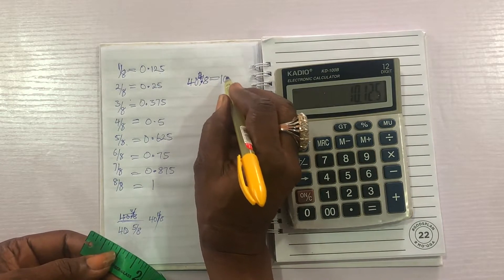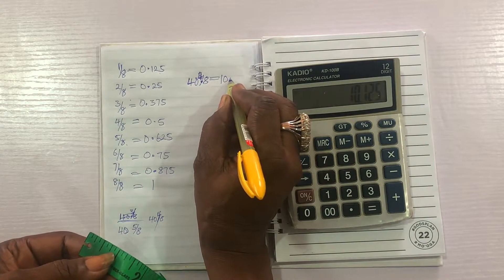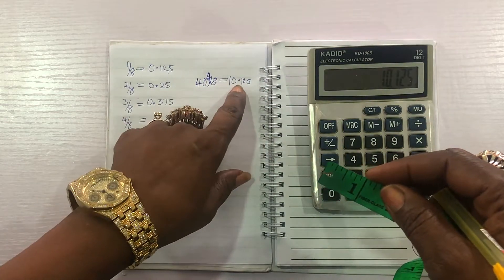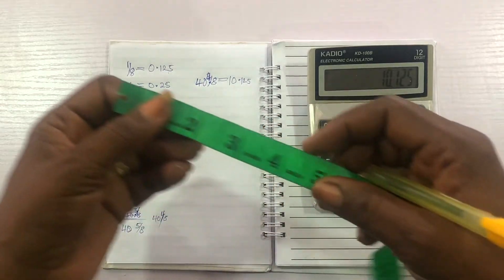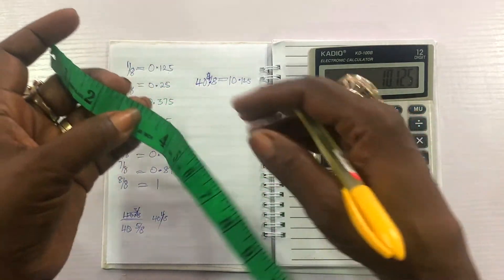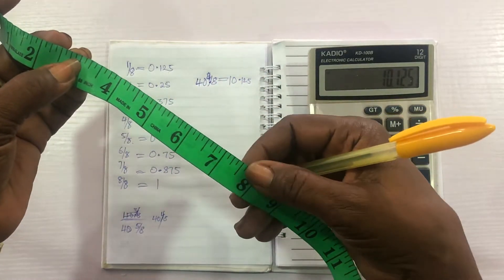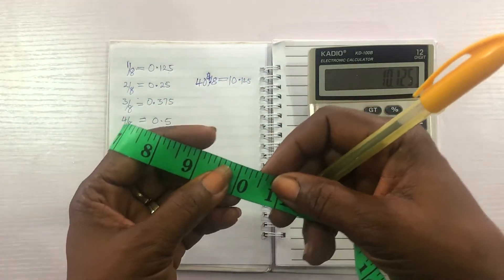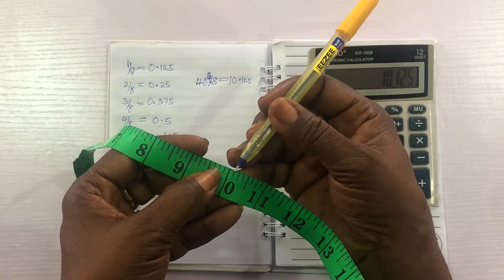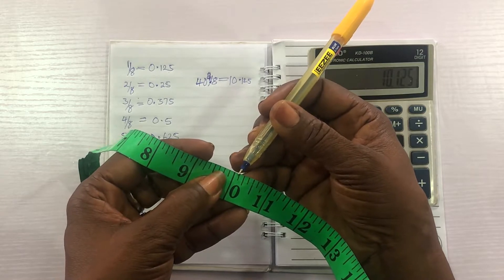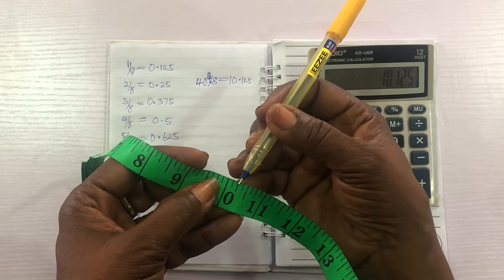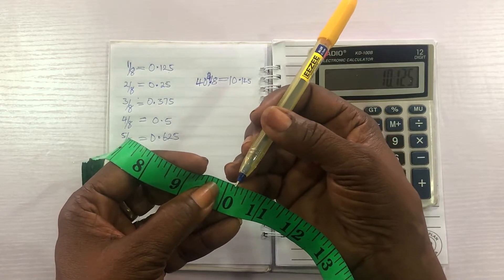10.125 on our tape rule is 1, 2, 3, 4, 5, 6, 7, 8, 9, 10. This is 10. That 0.125 is one over eight. So, this is where your tape rule will be. Not jumping into calculation. You don't approximate where you are cutting or where you are measuring. You don't approximate. Take accurate measurements.